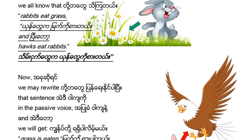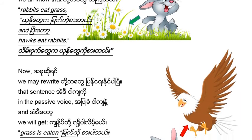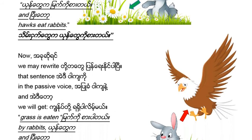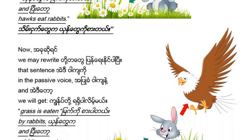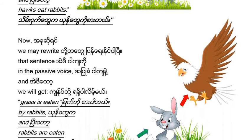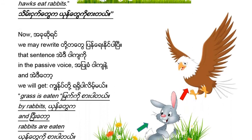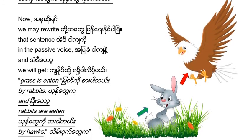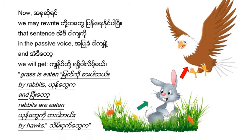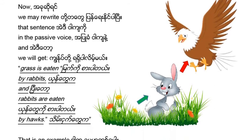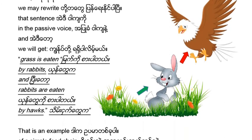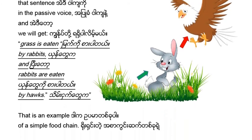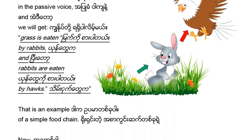Now, we may rewrite that sentence. In the passive voice, we will get: grass is eaten by rabbits. And rabbits are eaten by hawks. That is an example of a simple food chain.